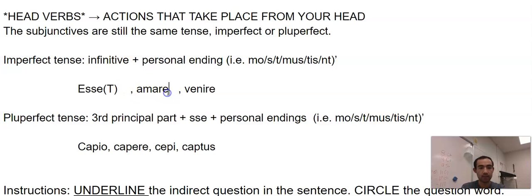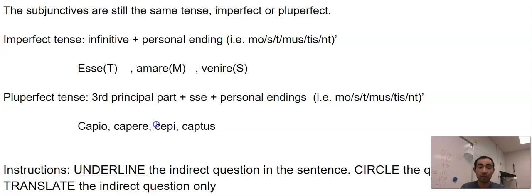Pluperfect is that third principal part plus s-s-e plus whatever ending we want: issem, isses, isset. Cepisset, we have a-piece-sent.